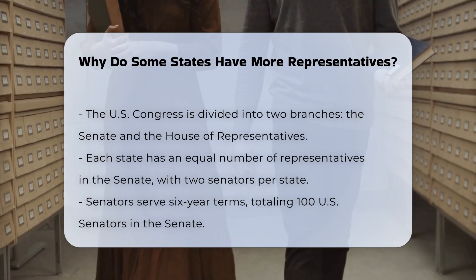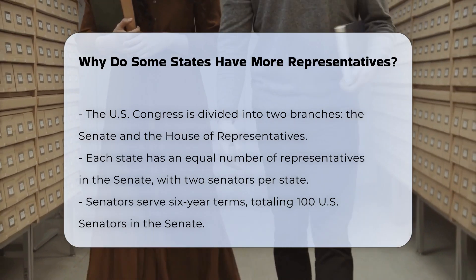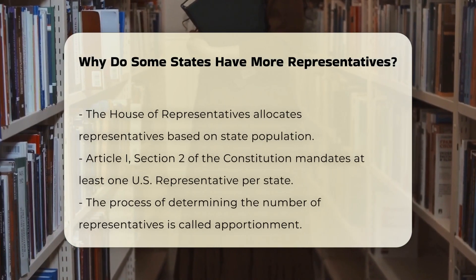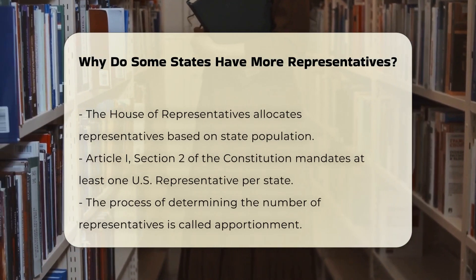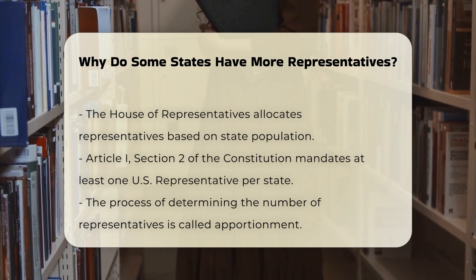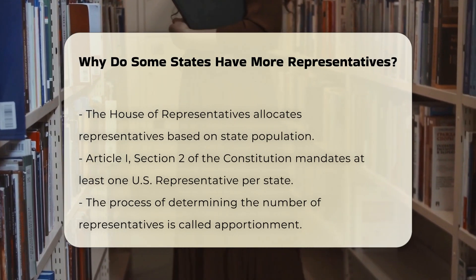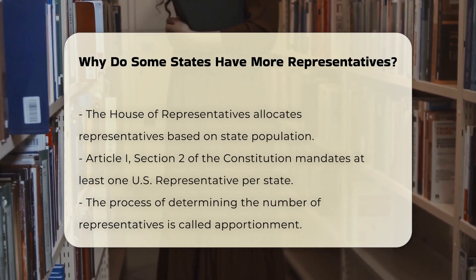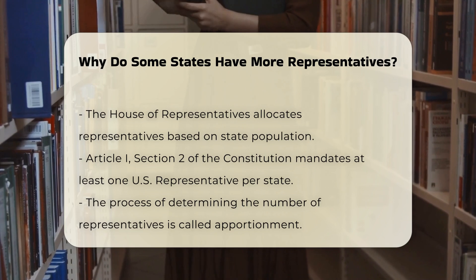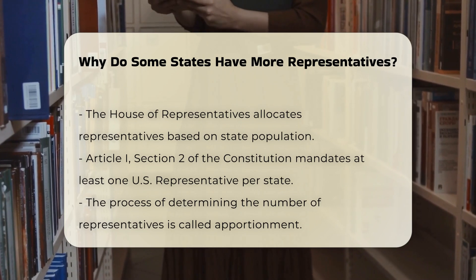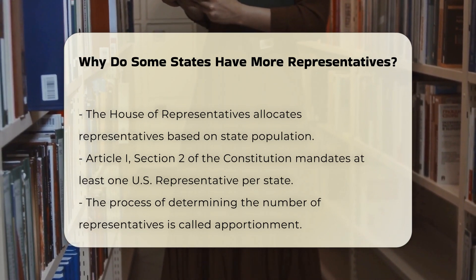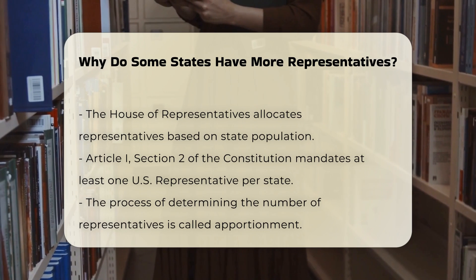The House of Representatives, however, operates differently. The number of representatives for each state is determined by its population. This is outlined in Article 1, Section 2 of the Constitution, which states that each state shall have at least one U.S. representative, with the total number of representatives being proportionate to the state's population.